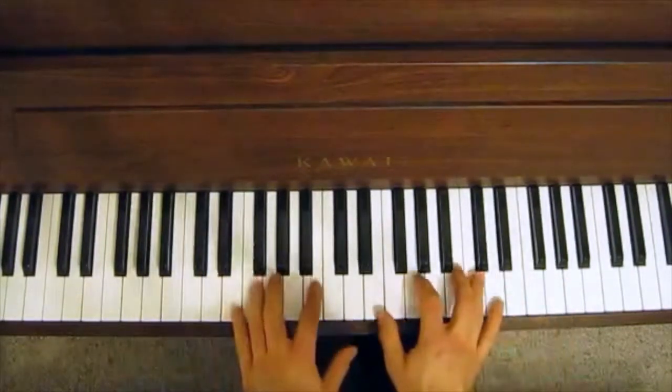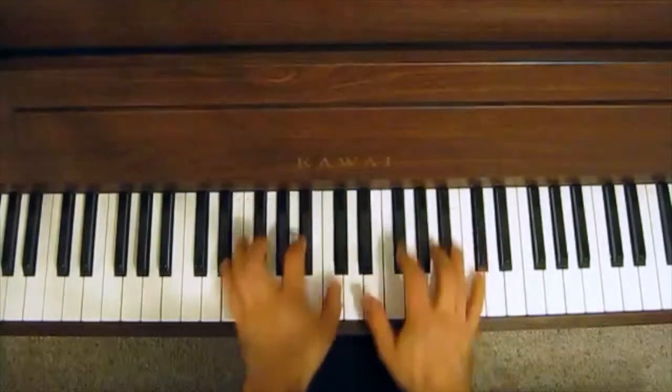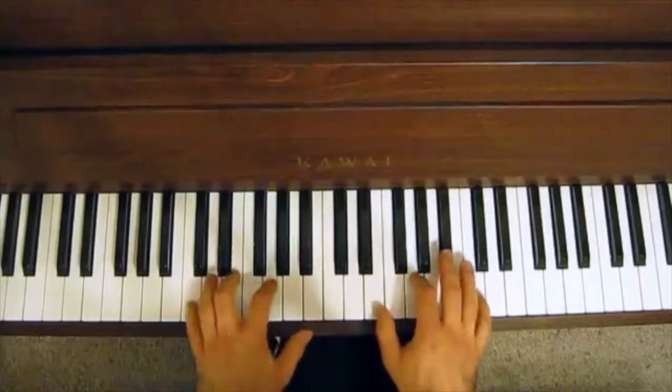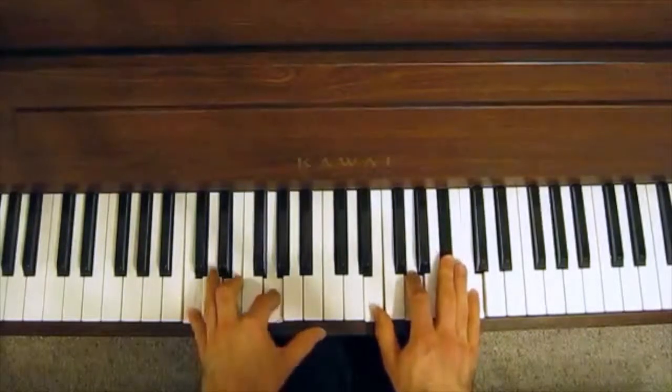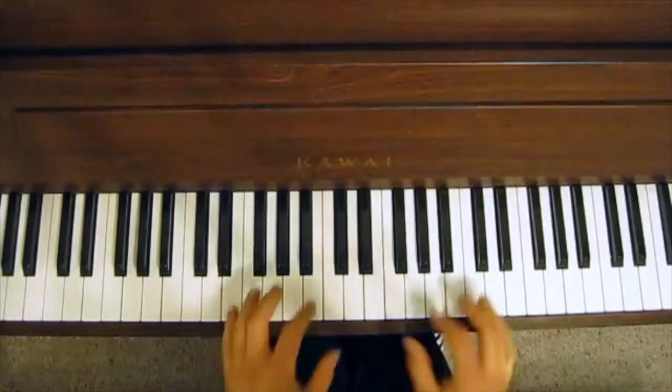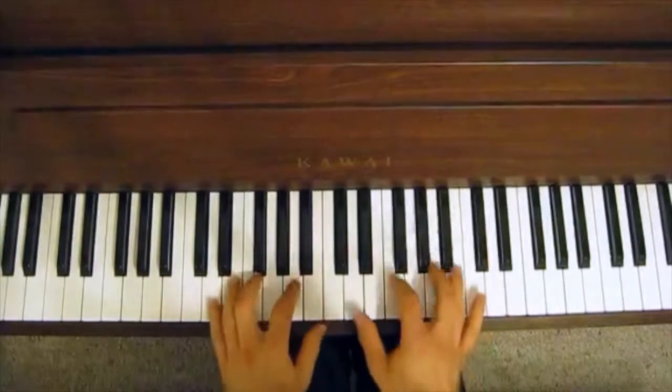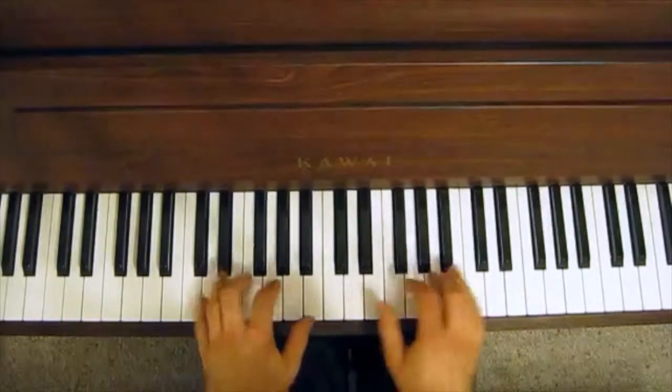So just as a refresher, the 3-6-2-5 goes Em7 to A7 and Dm7 to G7 to C7. Now that's effectively a secondary 2-5 to a primary 2-5 to a 1.